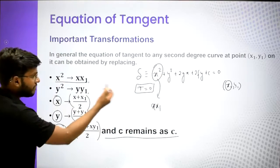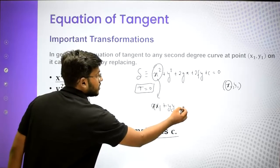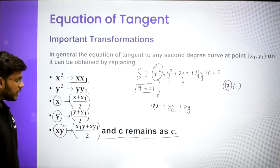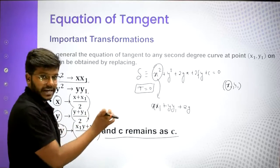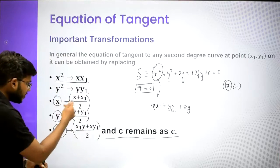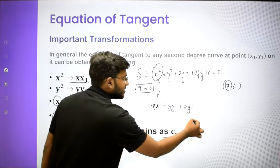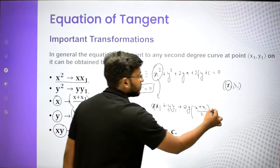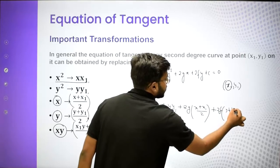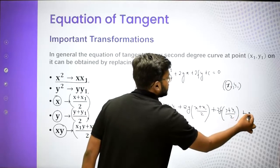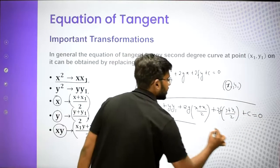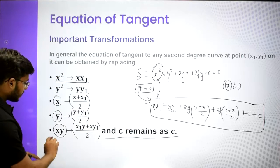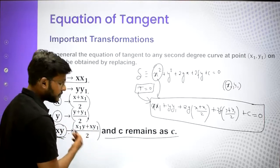Then y² becomes y·y1. For the 2g·x term, since x is a linear term, it becomes 2g·(x + x1)/2. Similarly, 2f·y becomes 2f·(y + y1)/2 and the constant c remains as it is. So this gives your equation of tangent T equal to 0. Note that for circles, we do not have terms of x·y, so that transformation is not needed here.